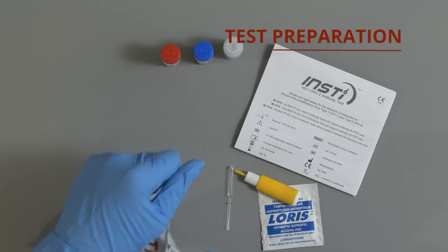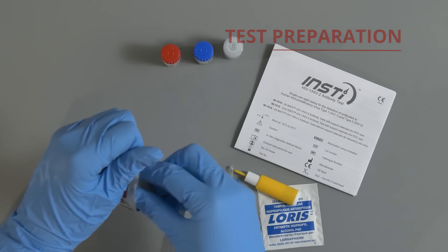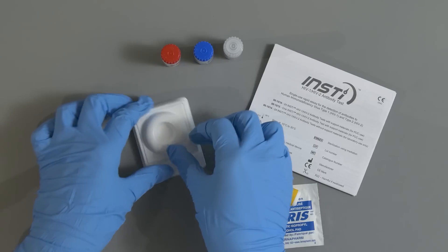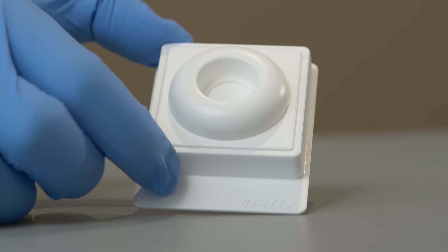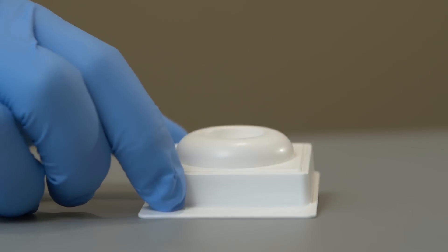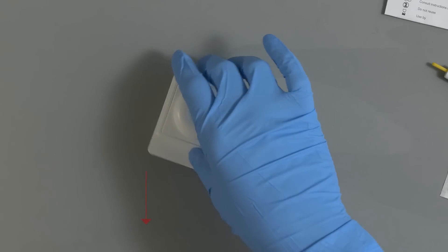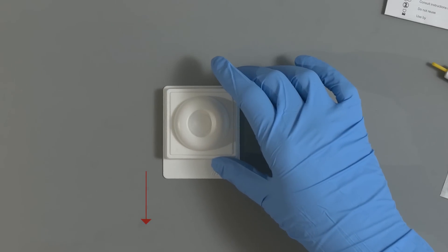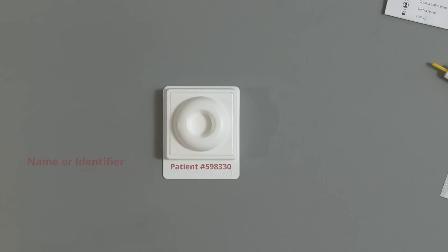Tear open the membrane unit pouch at the pre-cut edge and carefully remove the membrane unit without touching the centre well. Place the membrane unit on a level surface. Make sure the tab of the membrane unit is oriented towards you. For sample identification purposes, the tab may be labeled with the patient's name or identifier.